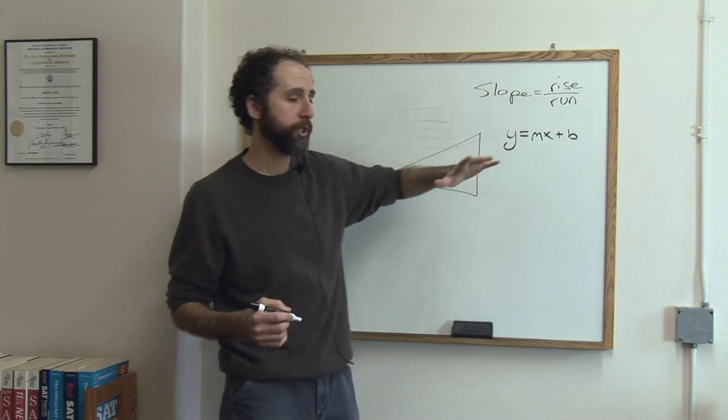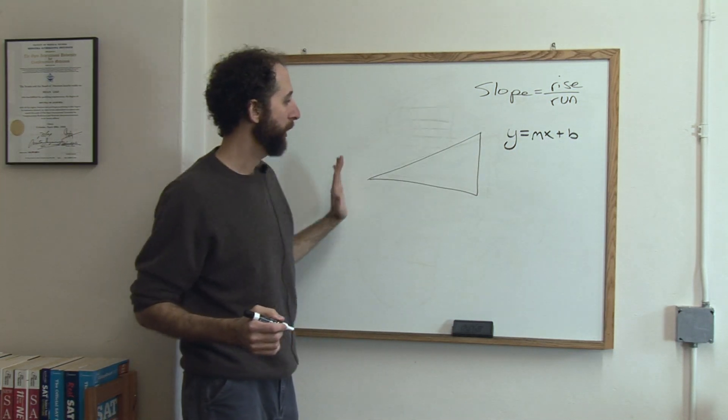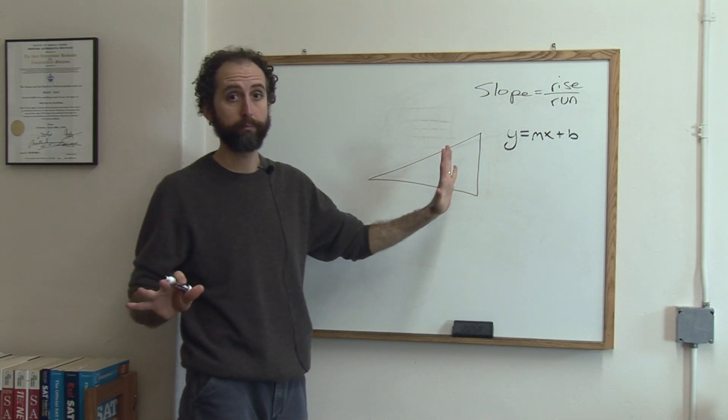So it's the same slope, and slope is rise over run. It just says how much did it go up and how much did it go over. That's all, it's as simple as that.